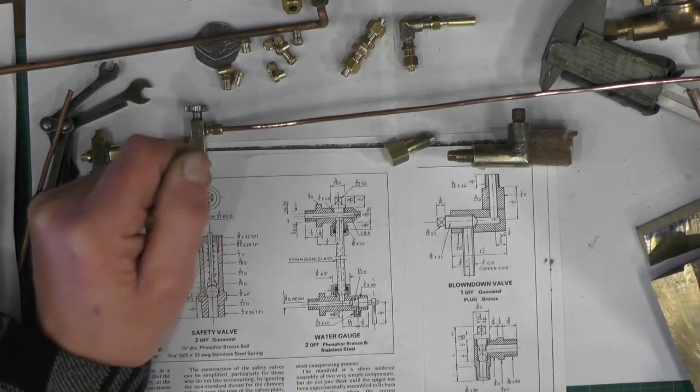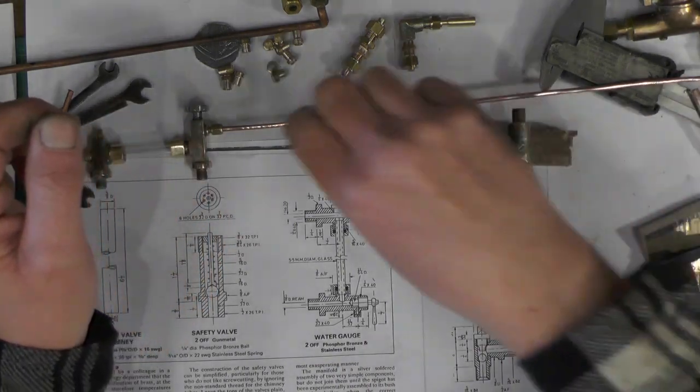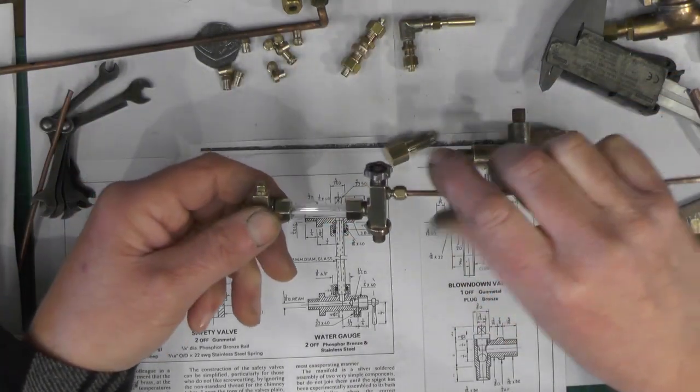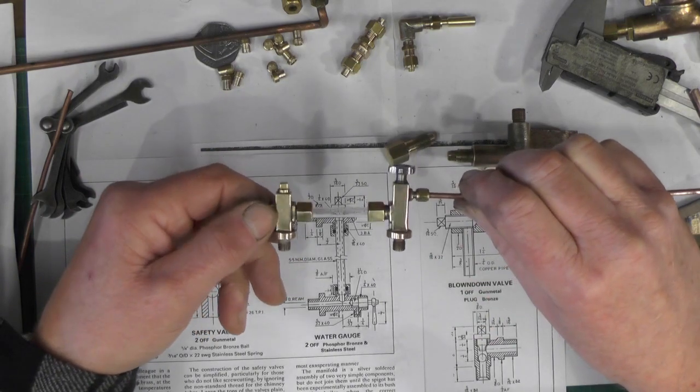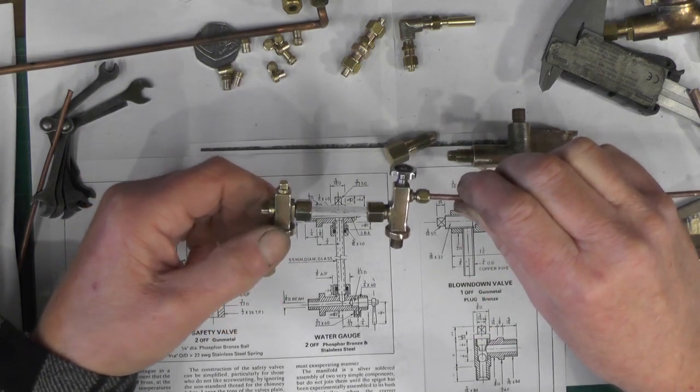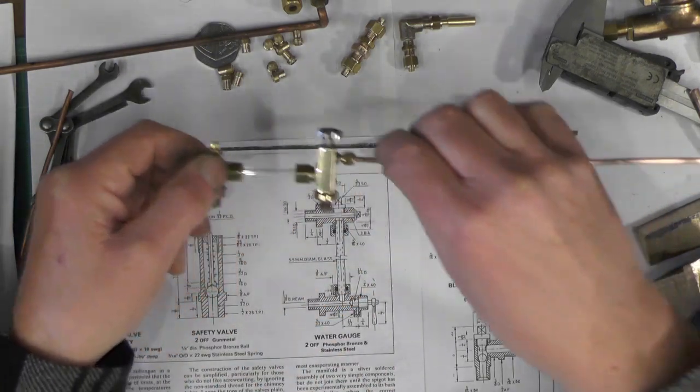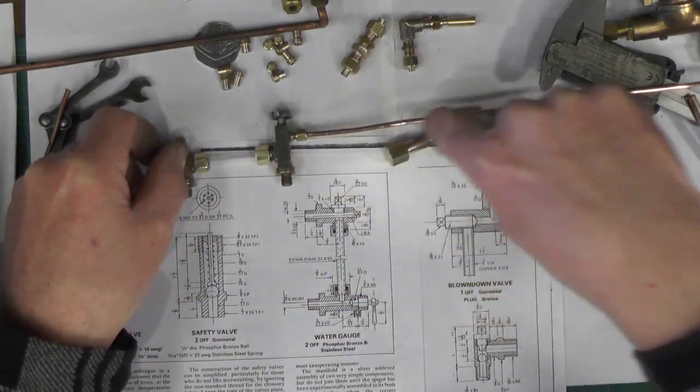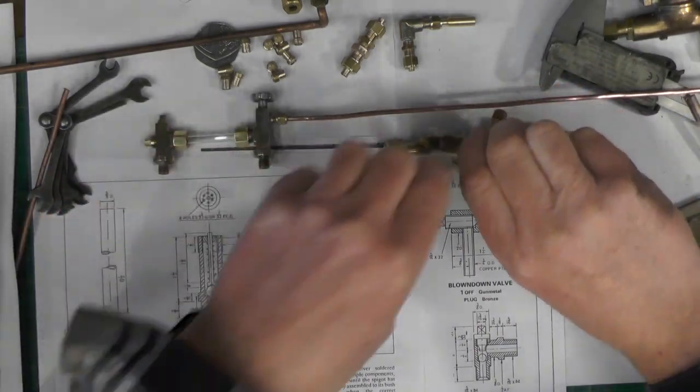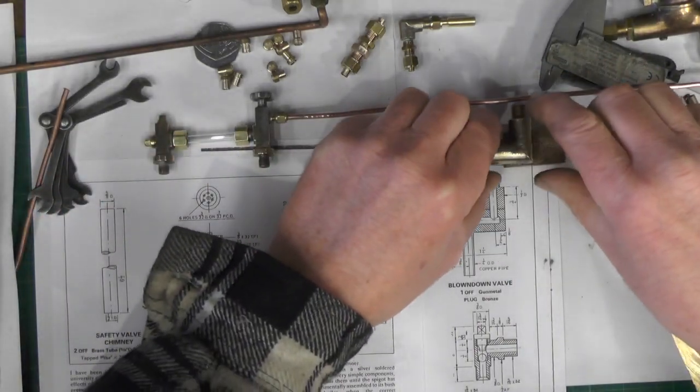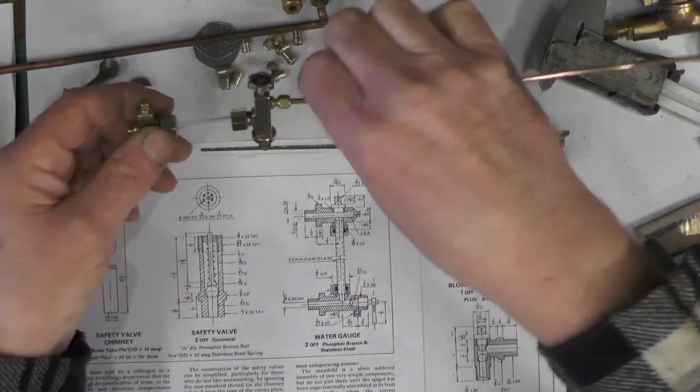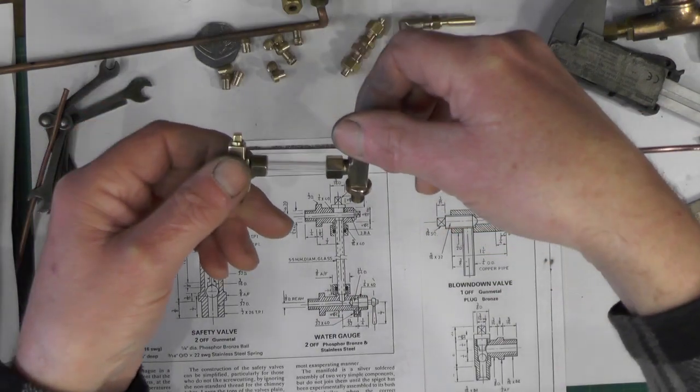Now in a previous video I made the water gauges, so you can see that in my playlist under boiler fittings I think, where I made the complete water gauge. But in this part I'm just dealing with the pipework where you can blow your gauge glass out.